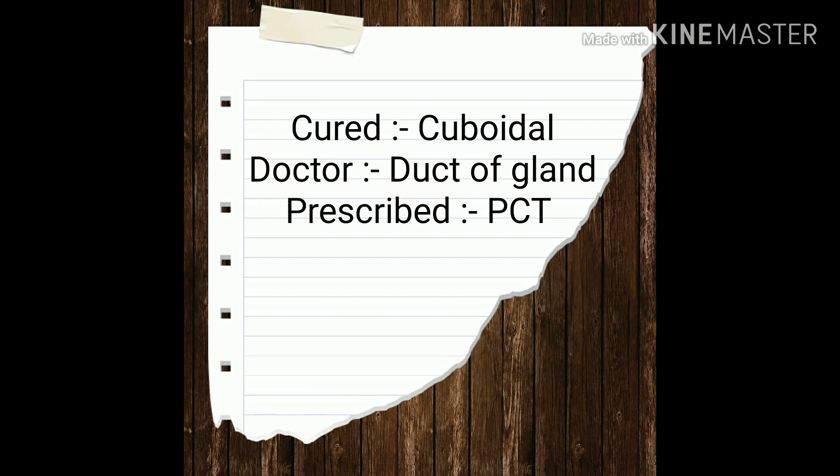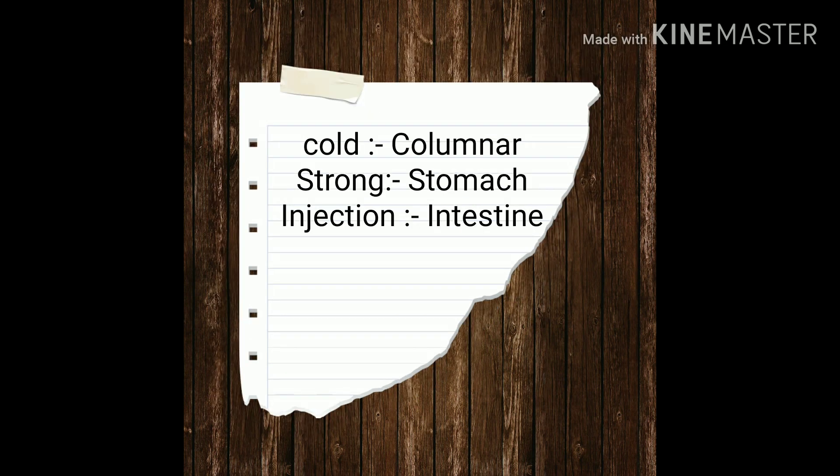In the sentence, 'doctor' represents duct of gland and 'prescribed' represents PCT. The next word is 'cold' — cold represents columnar epithelium, which is found in the stomach and intestine.